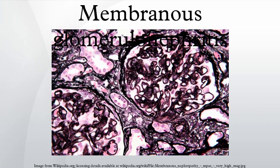The podocytes also lose their foot processes. As the disease progresses, the deposits will eventually be cleared, leaving cavities in the basement membrane. These cavities will later be filled with basement membrane-like material, and if the disease continues further, the glomeruli will become sclerosed and finally hyalinized. Immunofluorescence microscopy will reveal typical granular deposition of immunoglobulins and complement along the basement membrane, usually affecting the entire glomerulus, though it can affect parts of it in some cases.